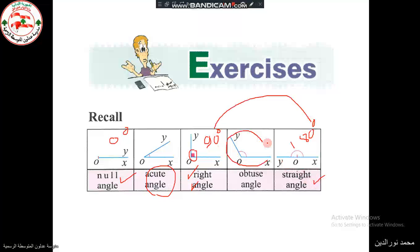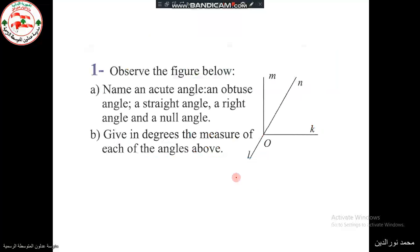If the angle is between a right angle and a straight angle — that is, between 90° and 180° — it's called an obtuse angle. Now for the first exercise: observe the figure below and name an acute angle, obtuse angle, straight angle, right angle, and null angle.